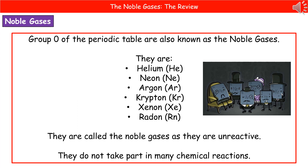Welcome to our review on the noble gases. When we're considering where we'll find the noble gases, they're on the far right-hand side, and they're known as group zero on the periodic table. So that's our helium, neon, argon, krypton, xenon, and radon.